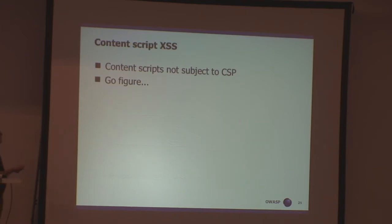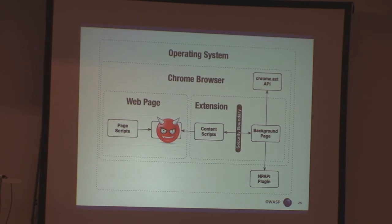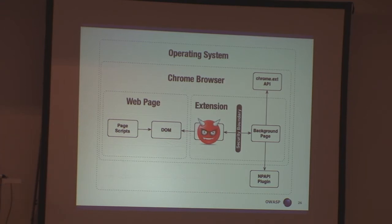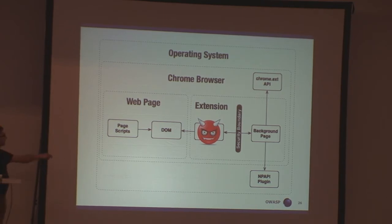I was targeting this scenario: there's a payload somewhere in the DOM of a web page. The content script fetches the payload and somehow executes it because it has a vulnerability. There's a much smaller code base to look at to exploit this kind of vulnerability — I don't even have to look at the usually extensive code of the UI pages; I only need to look at a few code snippets in the content scripts.